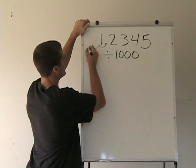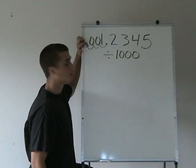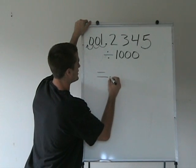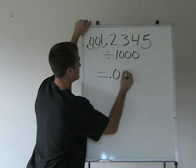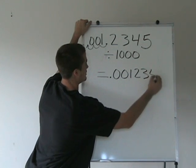So 1, 2, 3, and then there's going to be zeros in here. And this is going to be the new place for our decimal. And when we divide by a thousand, our answer is going to be 0.0012345.